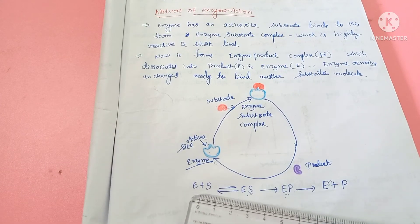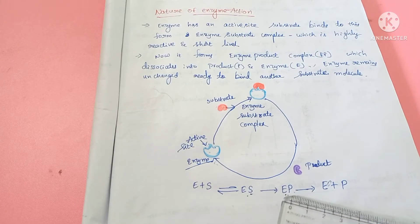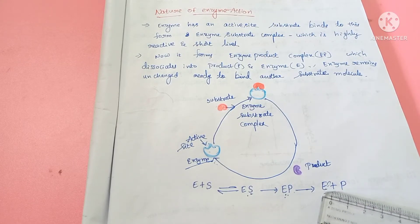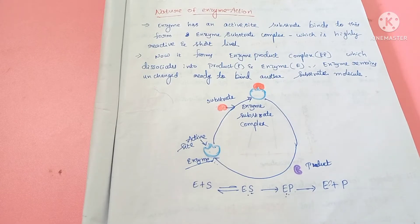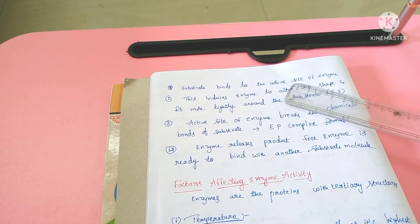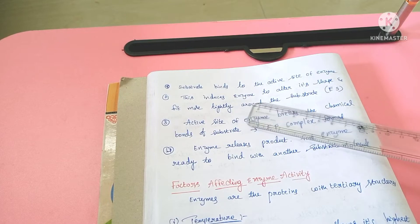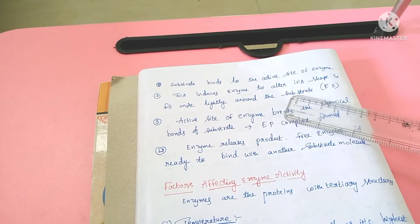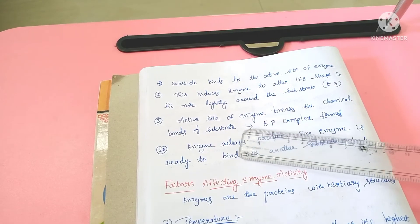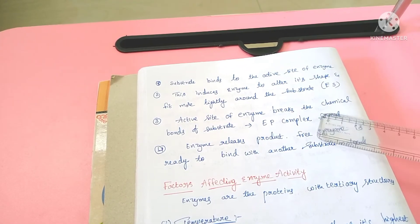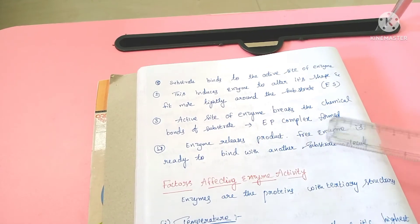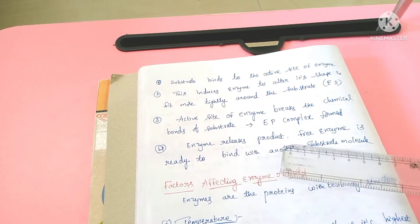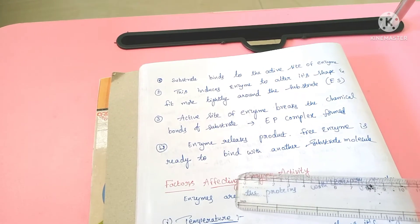To summarize: the enzyme binds with the substrate to form the enzyme-substrate complex. Next, the enzyme-substrate complex is converted to the enzyme-product complex. The product is then released into the surrounding environment. In step 2, the enzyme alters its shape to fit around the substrate. After the substrate binds, the enzyme breaks the chemical bonds of the substrate. The enzyme-product complex forms, and then the enzyme releases the product. The free enzyme is then ready to bind to the next substrate.